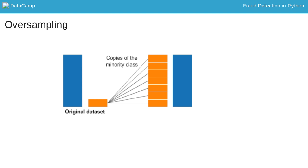But there are drawbacks. With random undersampling, you are effectively throwing away a lot of data and information. With oversampling, you are simply copying data and therefore are training your model on a lot of duplicates.